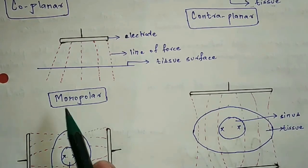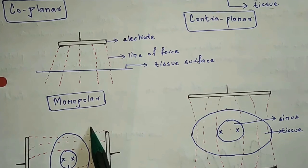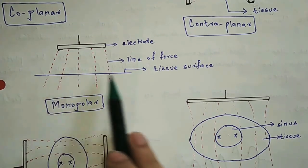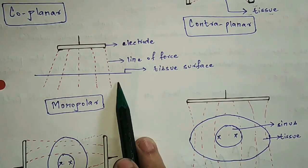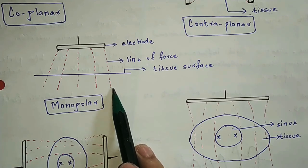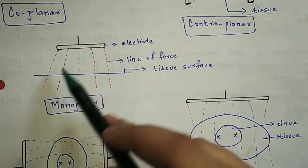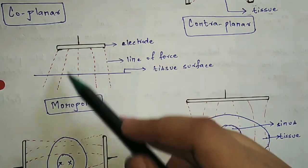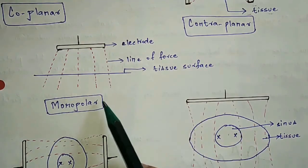Next is the mono-planar method. In this method, only one electrode is used over the treatment area. The other electrode can be placed on a distant site, or there may be just one electrode. This produces a radial electric field.